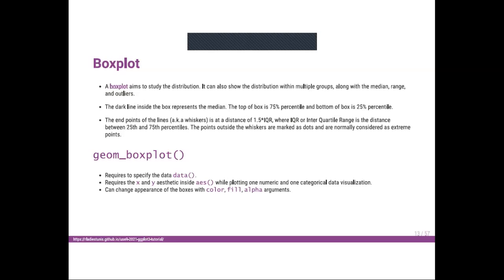In ggplot2, you use geom_boxplot() to visualize a box plot. geom_boxplot() requires some parameters like the data. You also need to specify the aesthetics x and y, and we can change the appearance of the boxes with the color, fill, and alpha arguments.